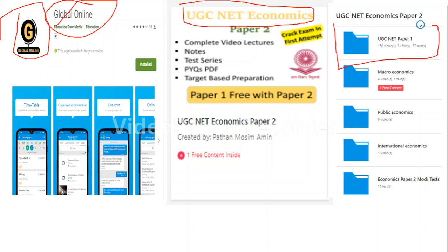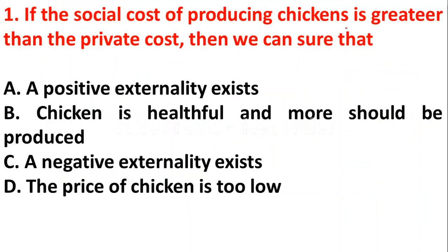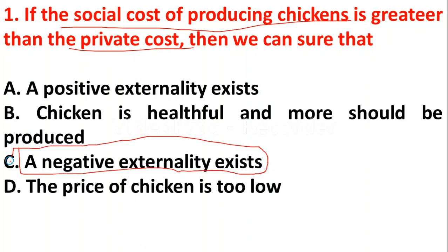Question 1: If the social cost of producing chickens is greater than the private cost, then we can be sure that: option A - a positive externality exists; option B - chicken is healthful and more should be produced; option C - a negative externality exists; option D - the price of chicken is too low. When social cost is higher than private cost, it is known as a negative externality, so option C is correct.